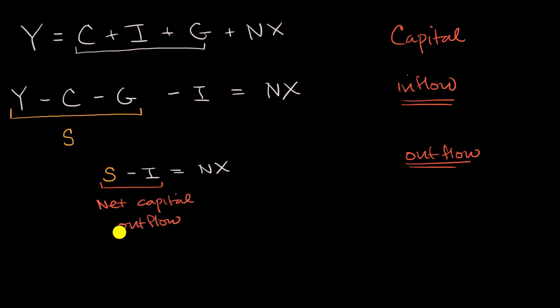And you'll sometimes see this abbreviated NCO. And so that sets up the identity that net capital outflows are equal to net exports. Let me just write it again for emphasis. Net capital outflows are equal to net exports.